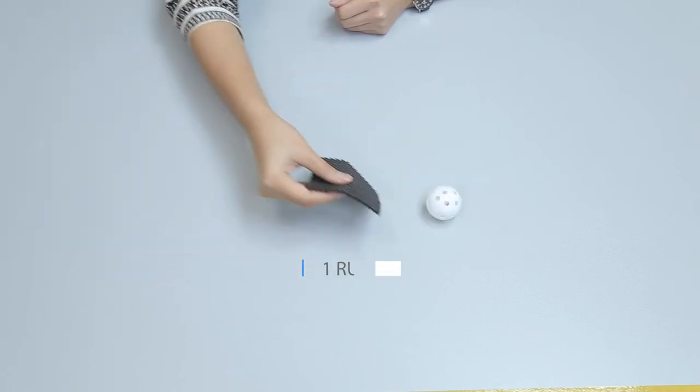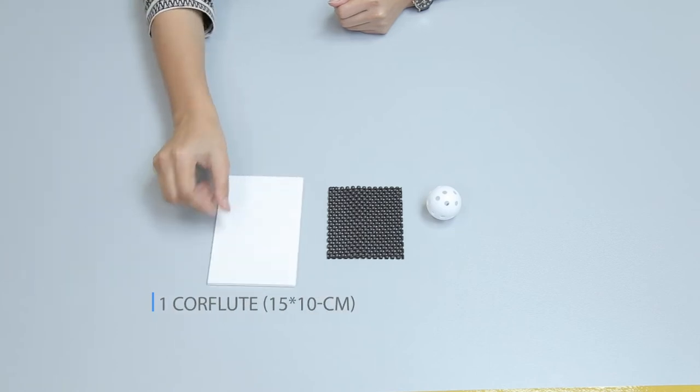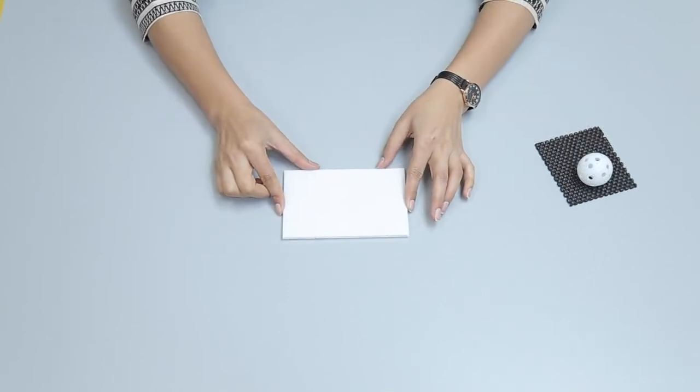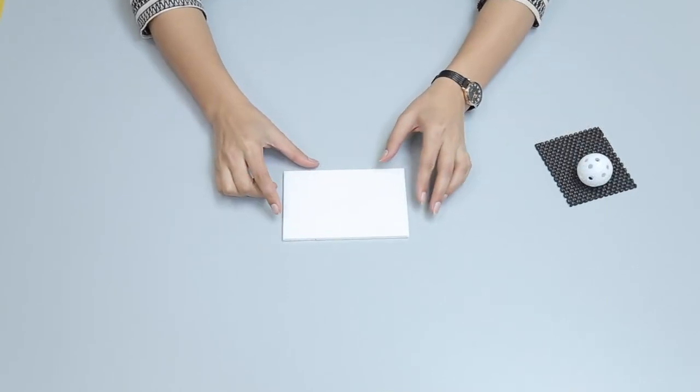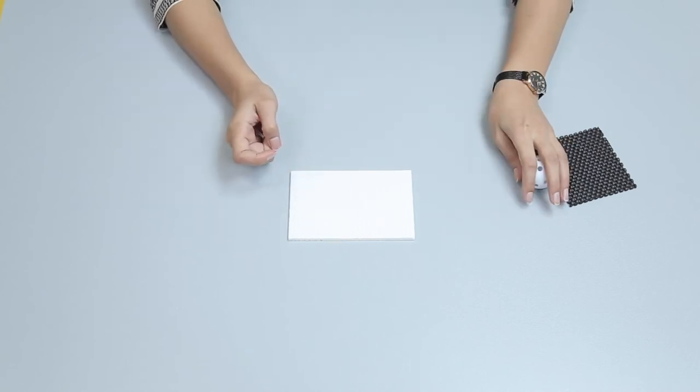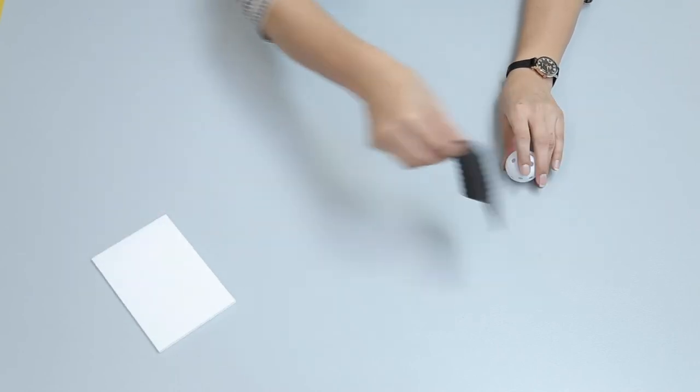Place a corflute on a table. Now make a ball roll along the corflute. It will roll smoothly on the surface because there isn't much friction.